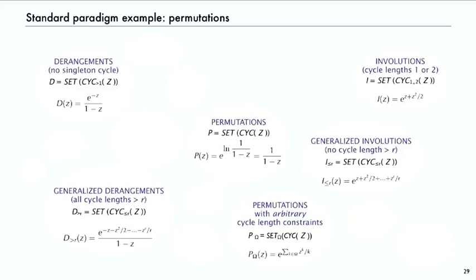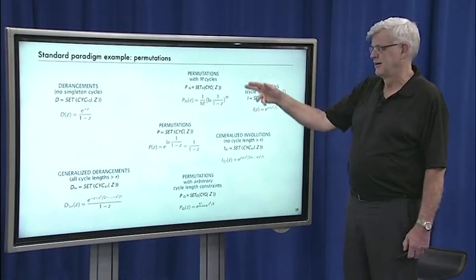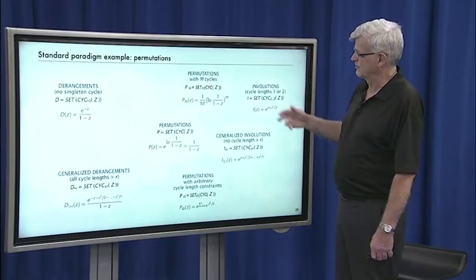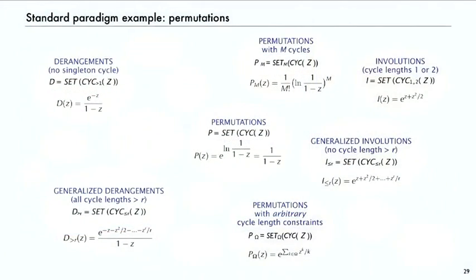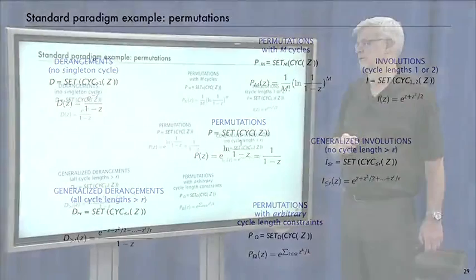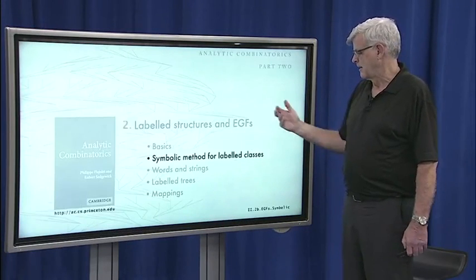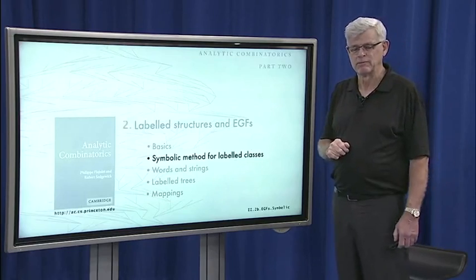That's an example of how a simple combinatorial construction with variations leads us not only to study combinatorial objects that mirror real-world situations, but also gives us immediately through the symbolic method a generating function equation. We start with a set of cycles of atoms, look at derangements as a modification, or involutions built from size one or two cycles — and we can generalize in both directions. That's an introduction to the symbolic method for labeled classes, and we're going to look at many other examples.